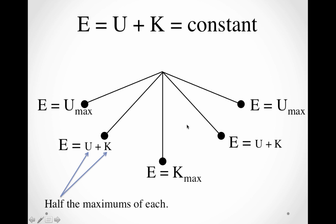A diagram you can copy down in your notes would look something like this. There's maximum potential energy at the top, and that is the total energy. When it falls down and is halfway down height-wise, you're going to get half of the maximum for each of the potential and kinetic — half and half will give you the total energy when it's halfway down. This height to here is equal to this height right there, and that's when you get half and half, giving you the total energy.